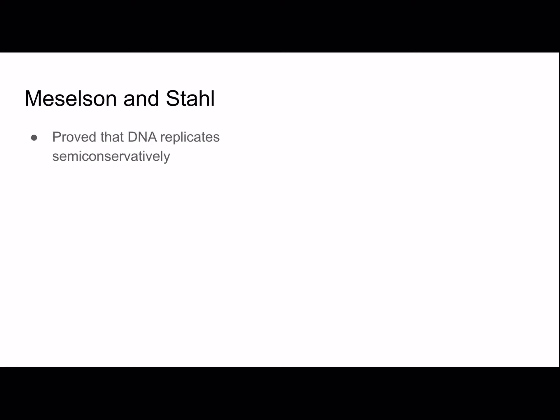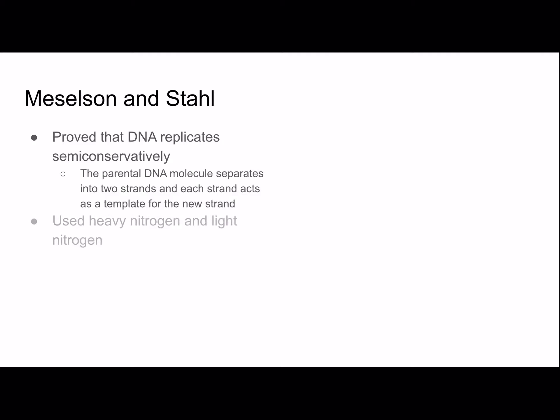Meselson and Stahl proved that DNA replicates semi-conservatively — meaning the parental DNA molecule separates into two strands, and each strand acts as a template for the new strand. That's why it's called semi-conservative: we have one old strand and one new strand. They used heavy nitrogen and light nitrogen, two isotopes of nitrogen that have different numbers of neutrons.